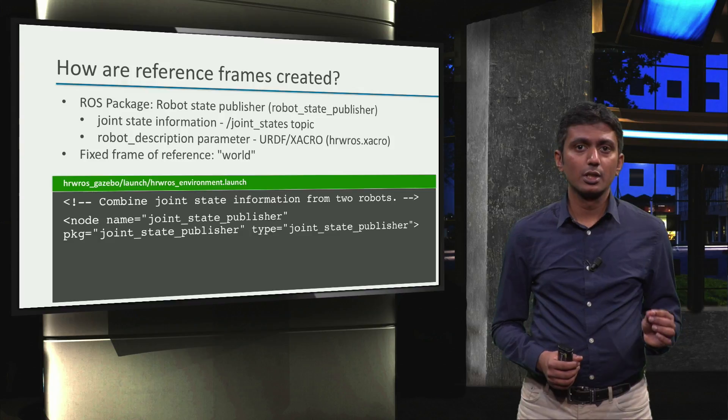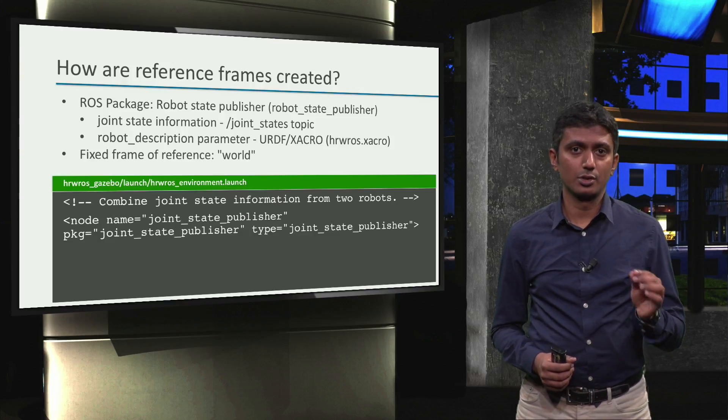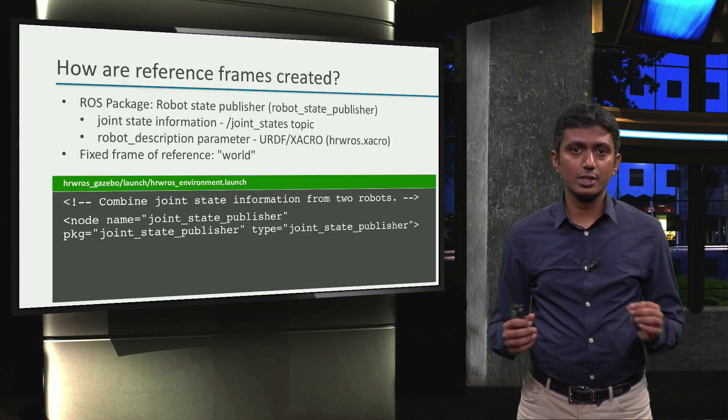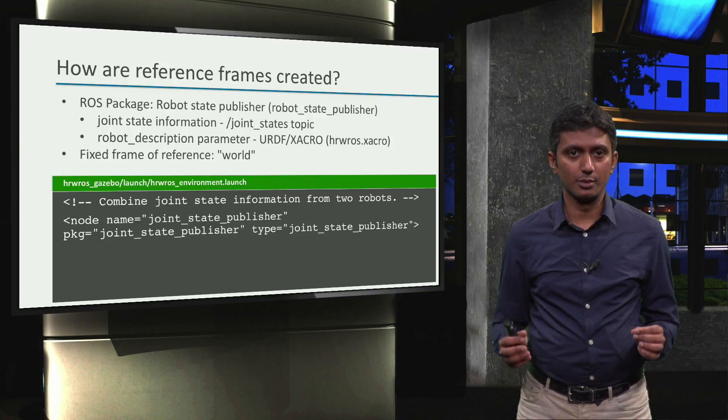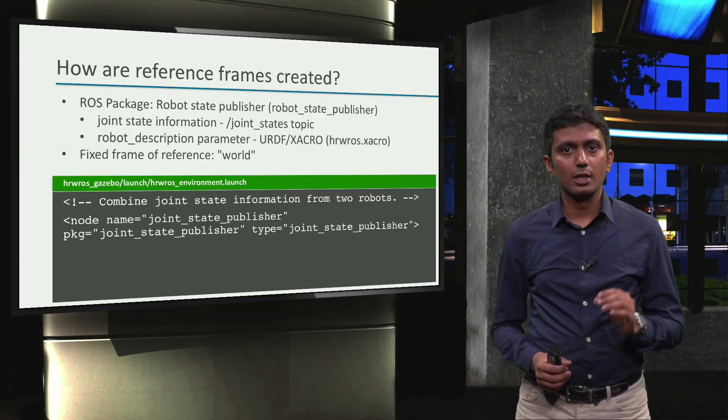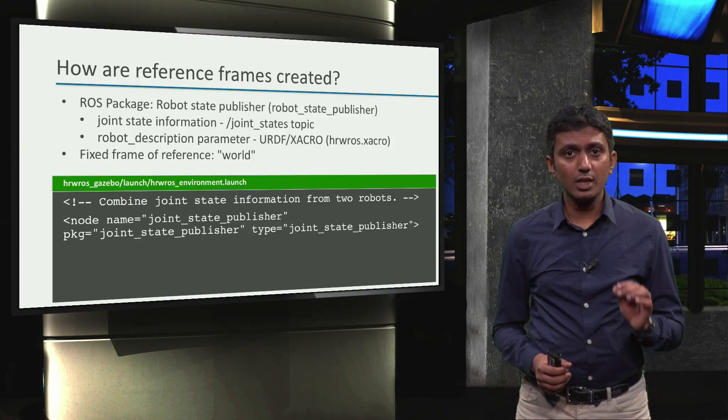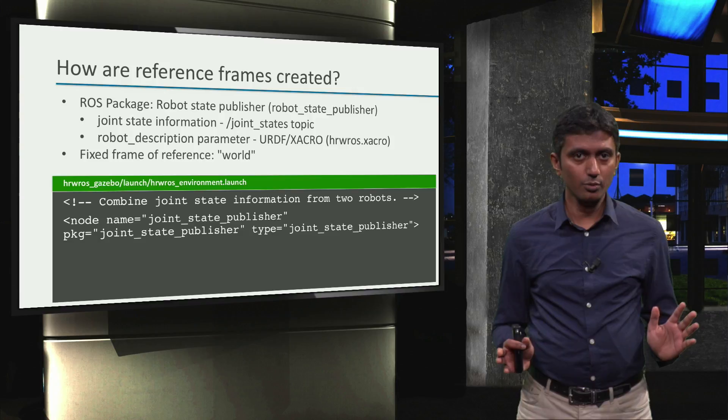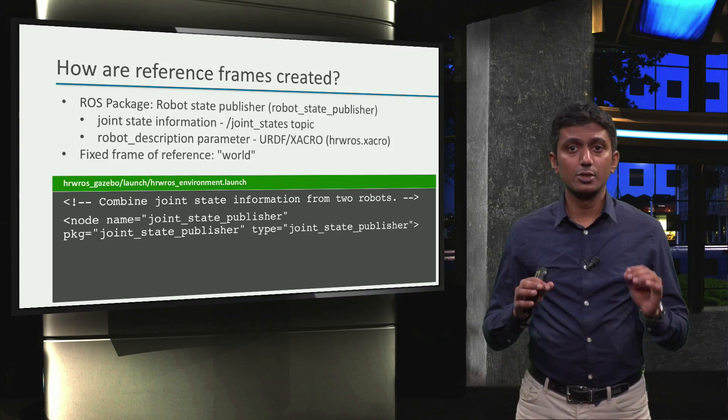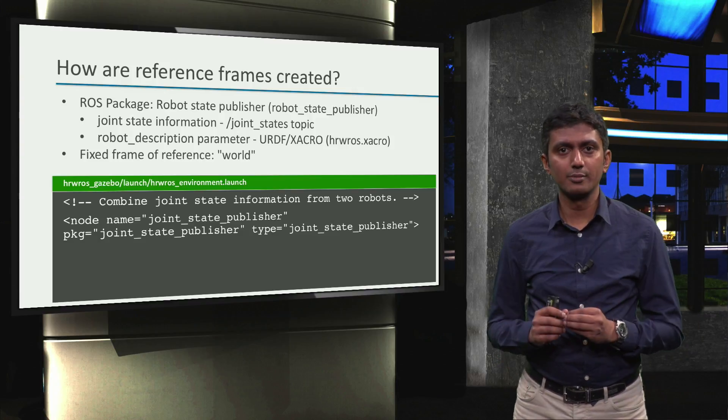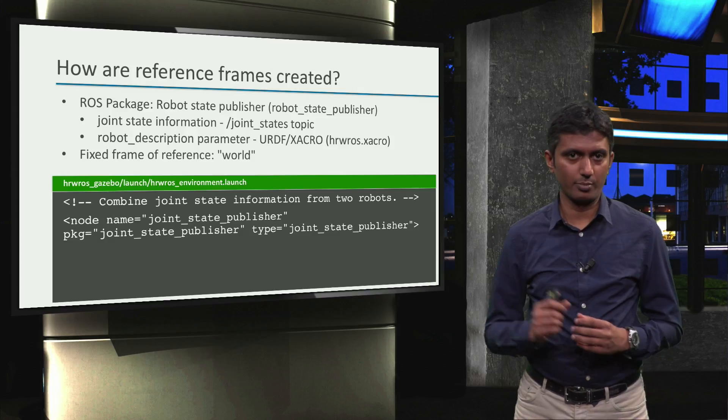We use the joint state publisher ROS node to combine the joint state information from the two robot arms. Note that the turtlebot directly publishes on the joint states topic via the corresponding Gazebo plugin. So we just have to ensure the joint state information of the two robot arms are also published onto that topic.